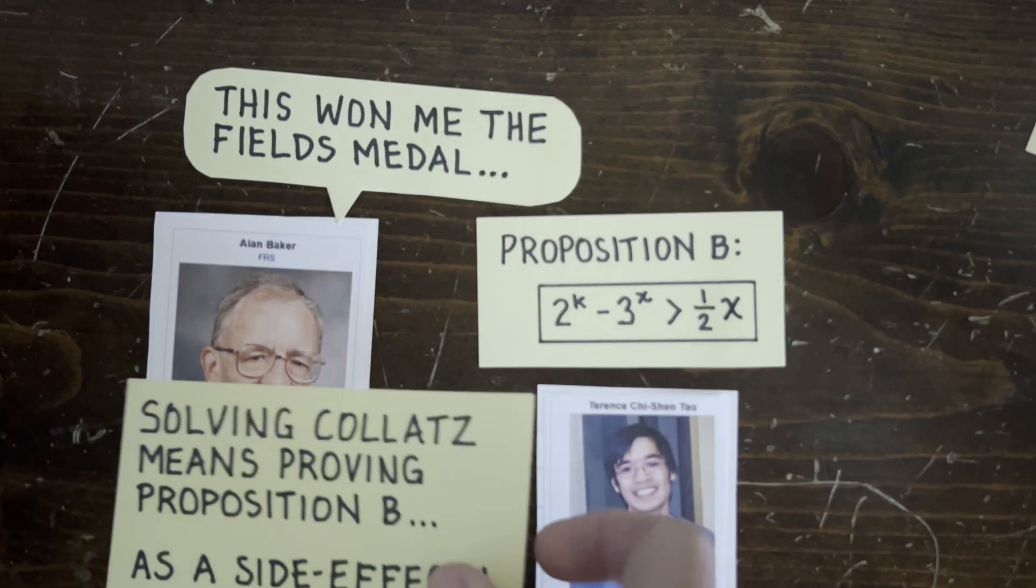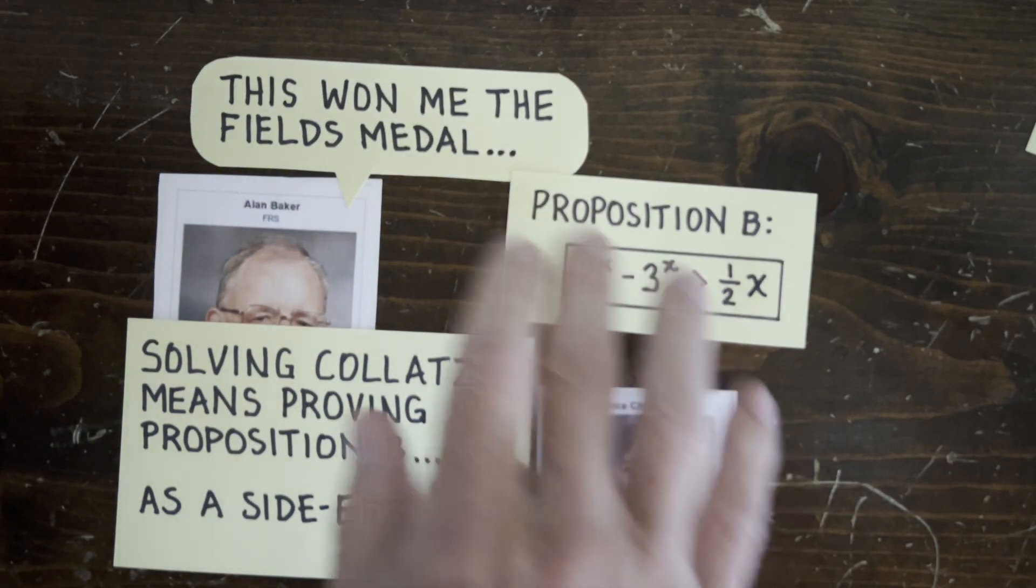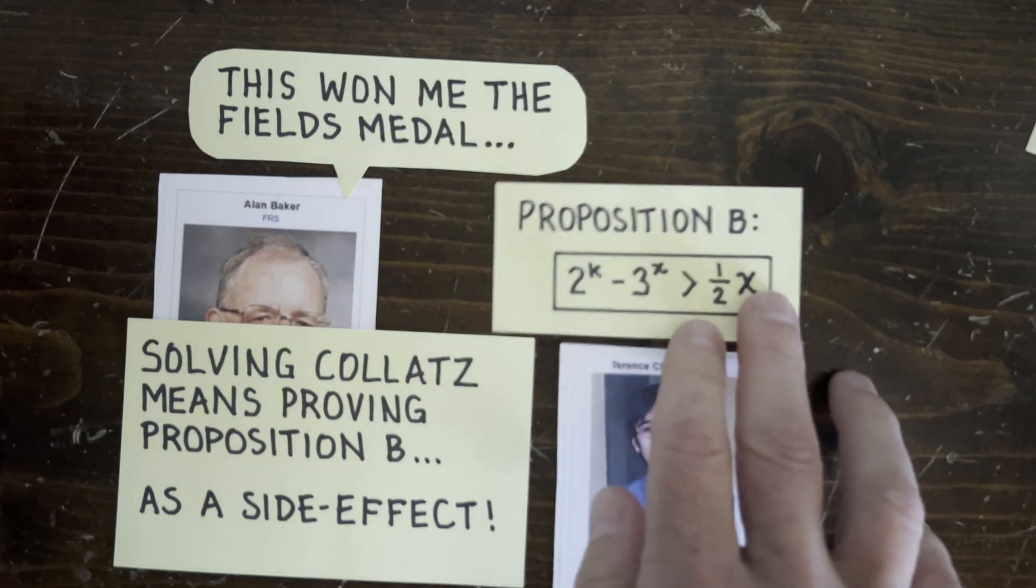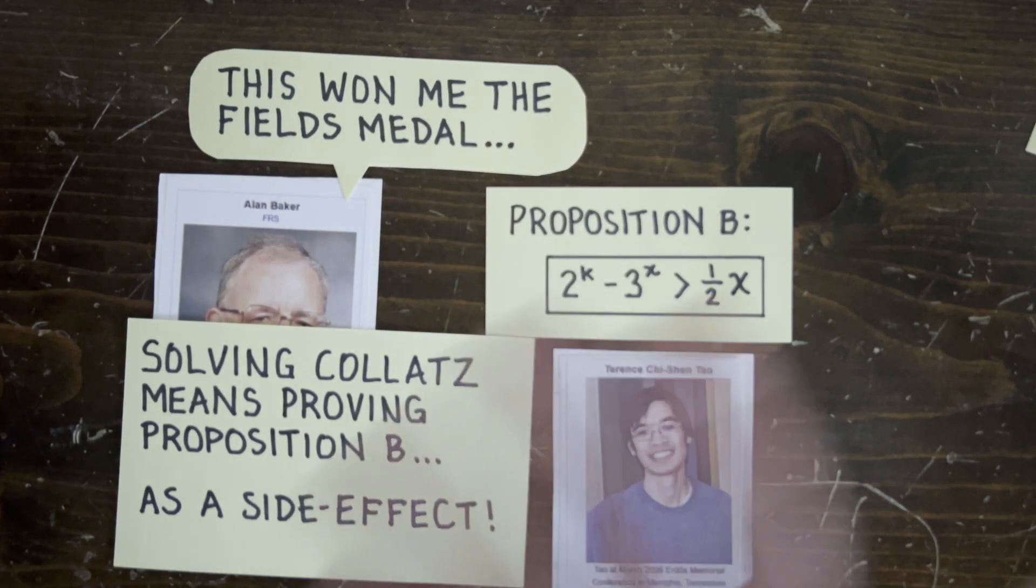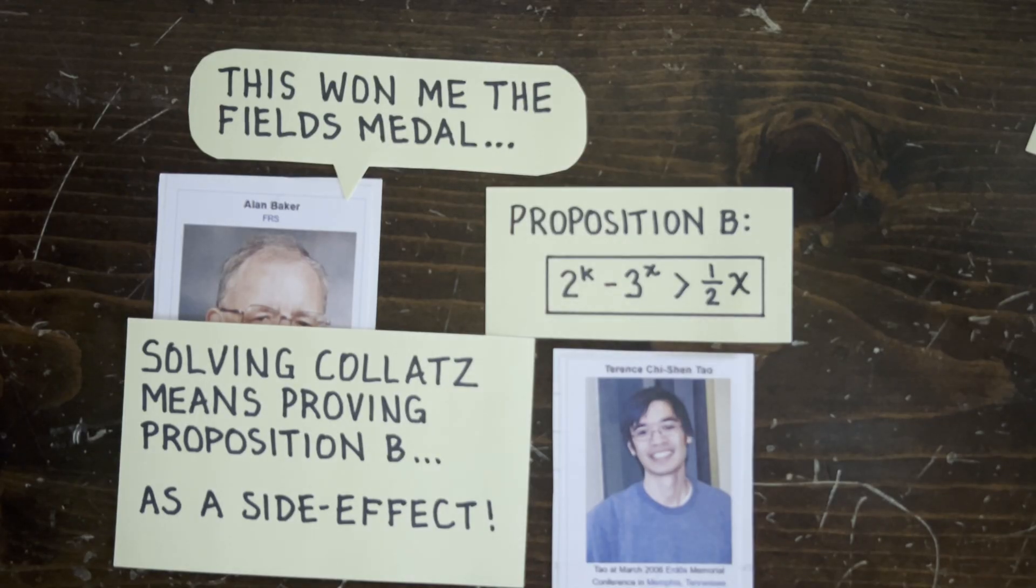It seems to require the same transcendental math that won Baker the Fields Medal in the 1960s. So, Terence Tao is basically saying that the Collatz conjecture is Baker hard, meaning that solving it would automatically prove Proposition B as a side effect, meaning the Collatz conjecture is harder than Proposition B, which is Fields Medal hard. Okay, so how does Tao actually show this?